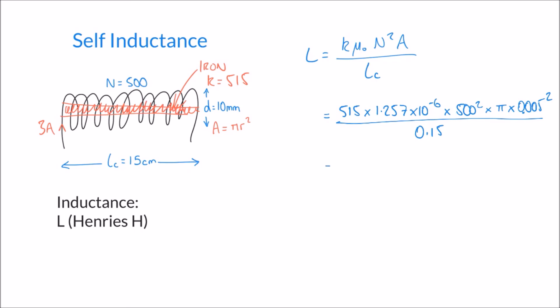Calculating this gives an answer of 84.74 times 10 to the minus 3 henrys. Since 10 to the minus 3 corresponds to the milli prefix, that is 84.74 millihenrys.